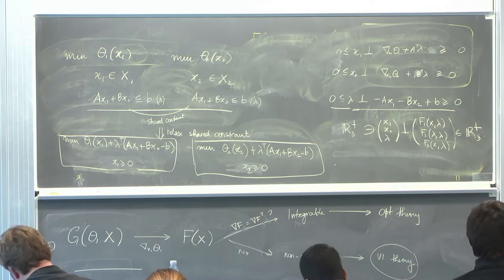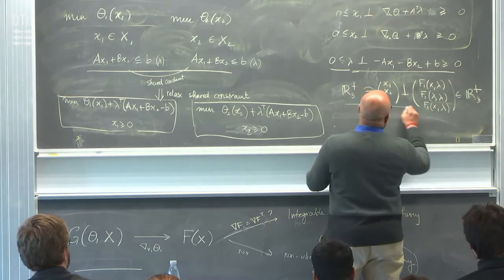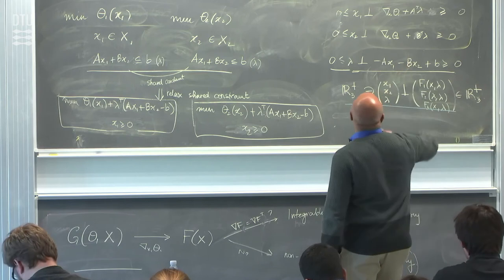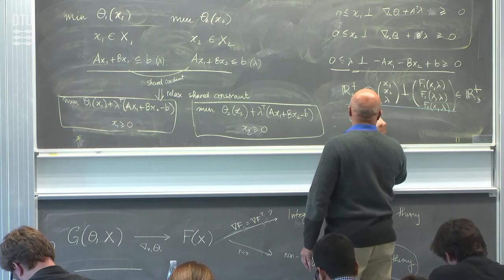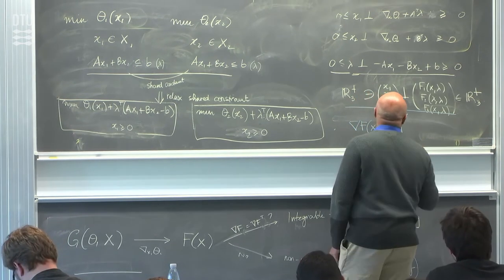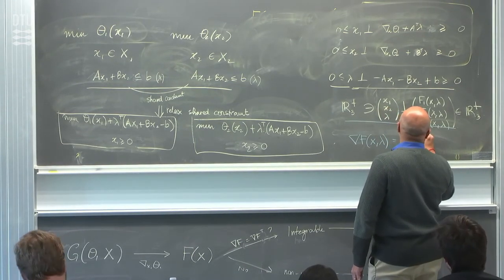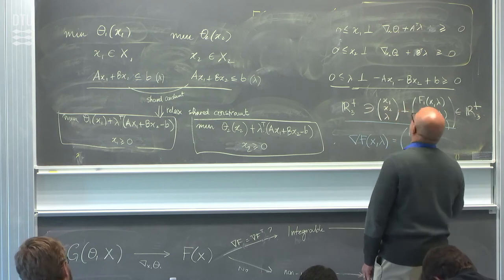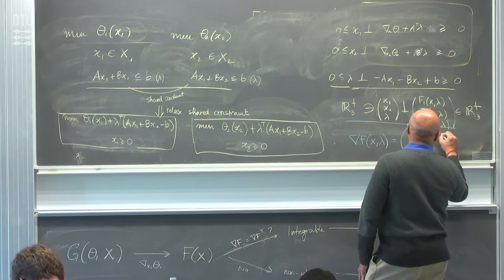You might lose compactness in some cases, but you benefit from having structure. What is interesting is that this thing has a skew-symmetric structure. If you look at the Jacobian of this map, the Jacobian has a particular structure.